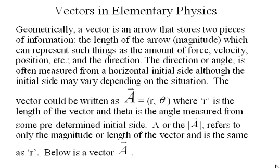Vectors in elementary physics. Geometrically a vector is just an arrow that stores two pieces of information: the length and the direction. The length of the arrow, or magnitude, can represent such things as the amount of force, velocity, position, etc., and the direction.